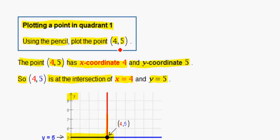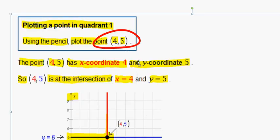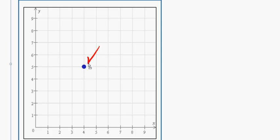So if we plot the point (4,5), we get this point. 4 on our x-axis and 5 on our y-axis meet at this point.